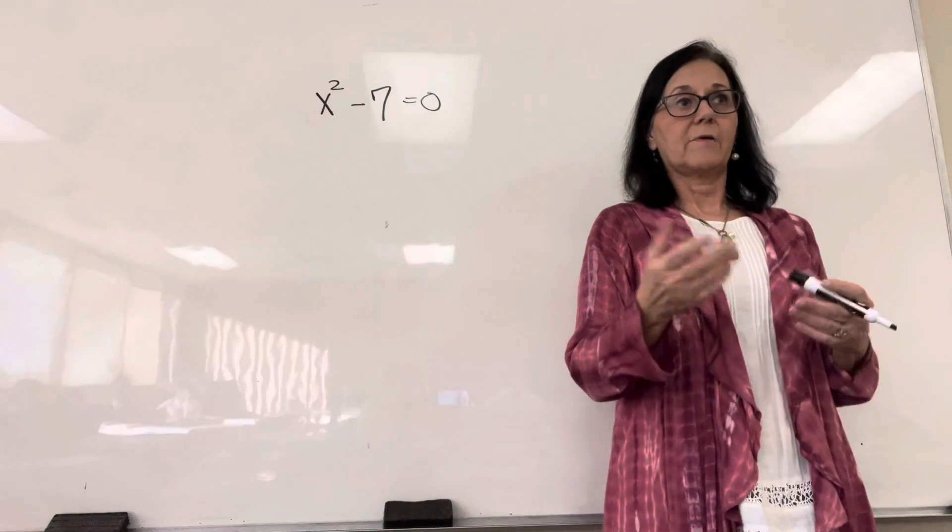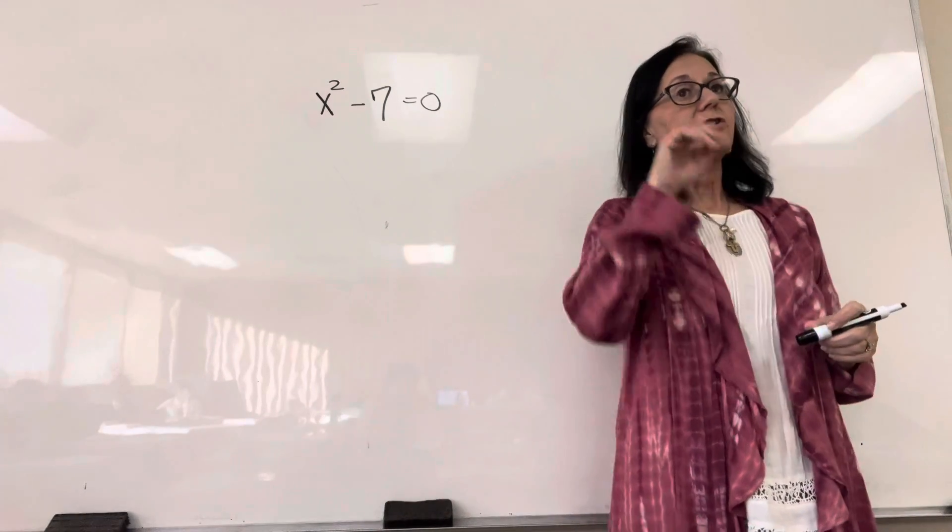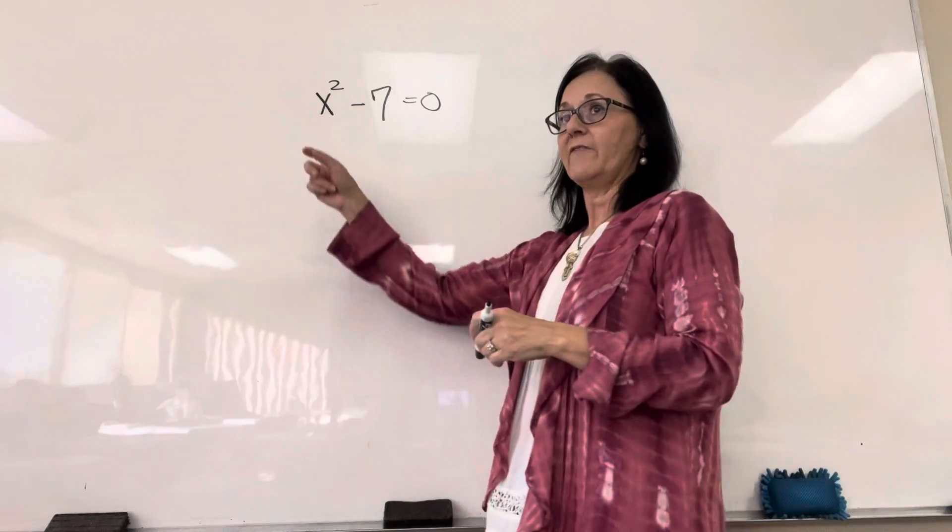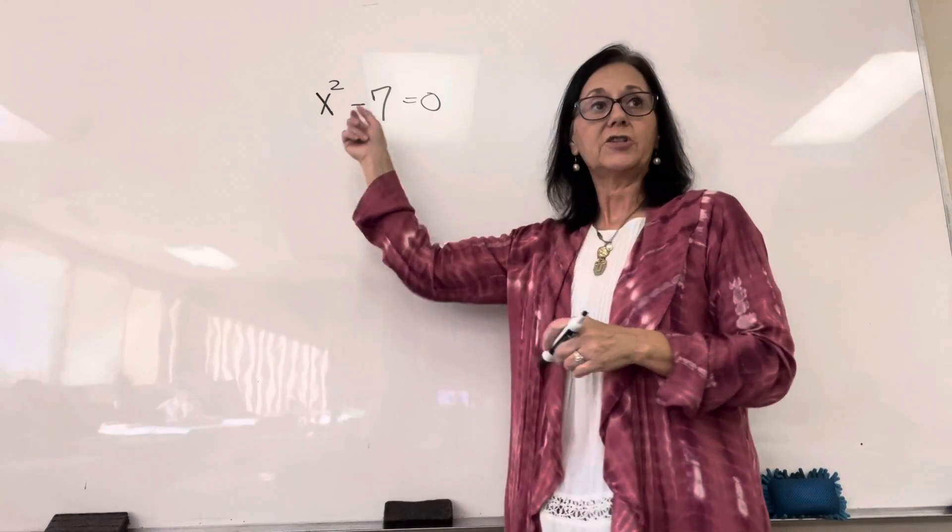They're not perfect squares, right? So, the way that we solve an equation when I have a term squared and a term that is not a perfect square is I move the x squared on one side, every other term on the other side.